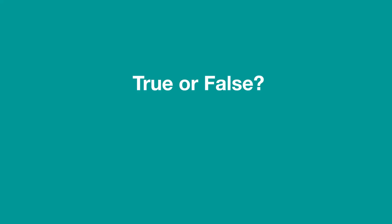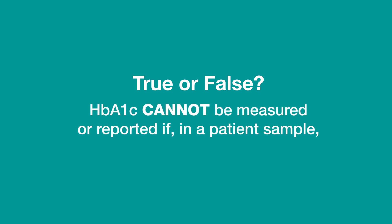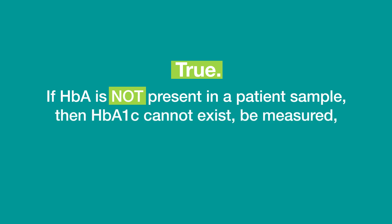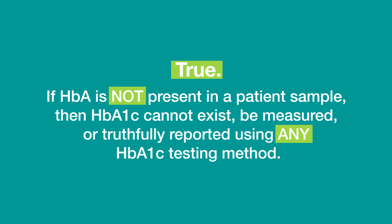True or false: HbA1c cannot be measured or reported if, in a patient sample, there is no hemoglobin A. True. If hemoglobin A is not present in a patient sample, then hemoglobin A1c cannot exist, be measured, or truthfully reported using any hemoglobin A1c testing method.